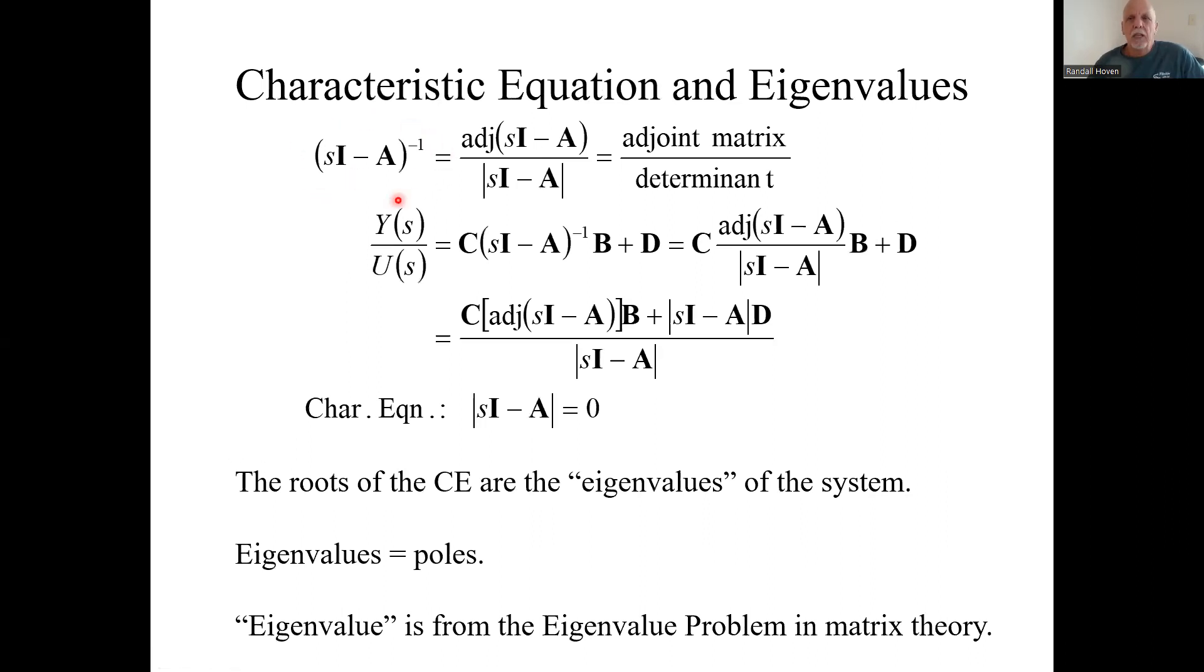We had to deal with this, the inverse of sI minus A. The inverse is the adjoint over the determinant. So that's what this transfer function becomes. I can put it all over that determinant. That is my characteristic equation. Whatever makes this determinant be zero, whatever s's make this determinant zero, those will be the poles of the system. Now we call them eigenvalues when we're doing state space, or modern control, because it comes from the eigenvalue problem in matrix theory. But eigenvalues are the same things as poles.